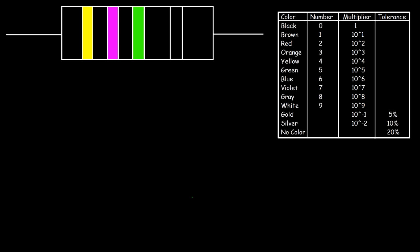Here's another one you could try. Go ahead and calculate the resistance using the resistor color code, determine the tolerance, and also the range in which the true resistance can lie. Feel free to pause the video and see what the solution is going to be. So the first color is yellow, the second one is purple or violet, the third one is green, and the last one has no color.